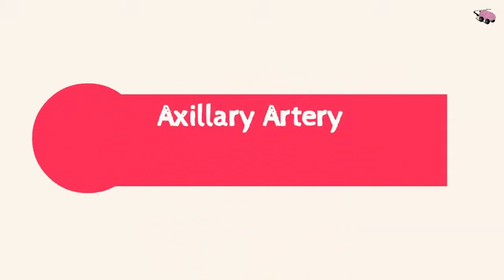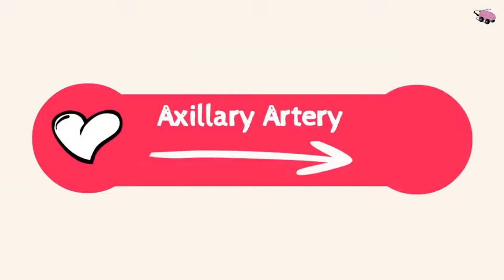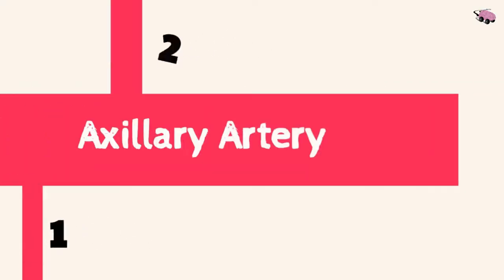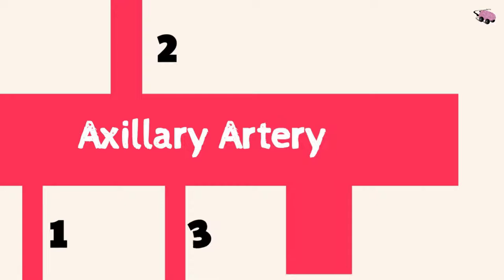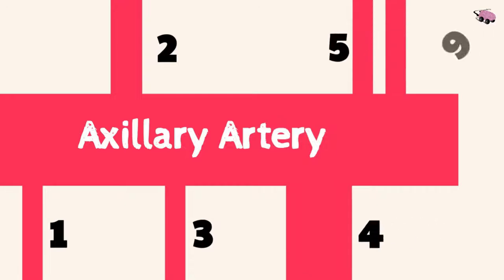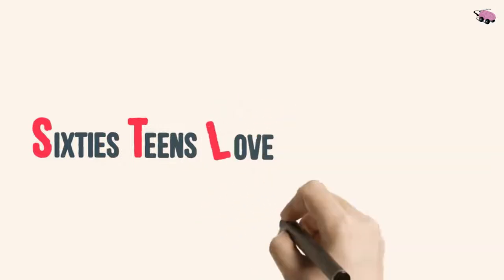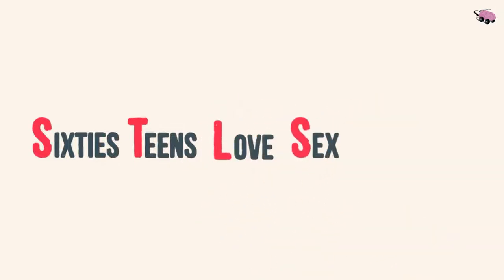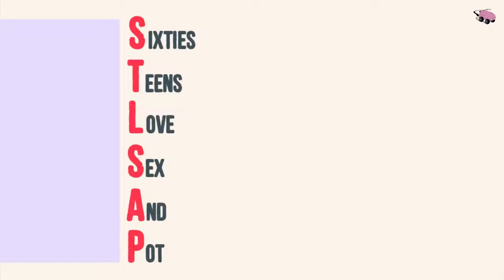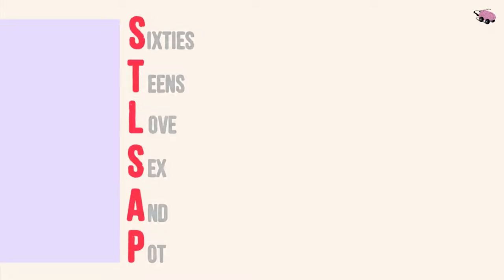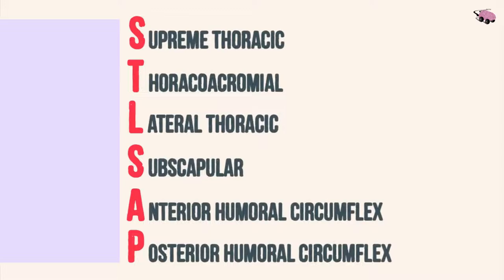The axillary artery is simple — it arises from your heart to your hand. The main branches of the axillary artery are six, and we'll remember them by a mnemonic: Sixties, teens, love, sex, and pot. Each first letter of each word corresponds to each branch in order coming off the axillary artery.